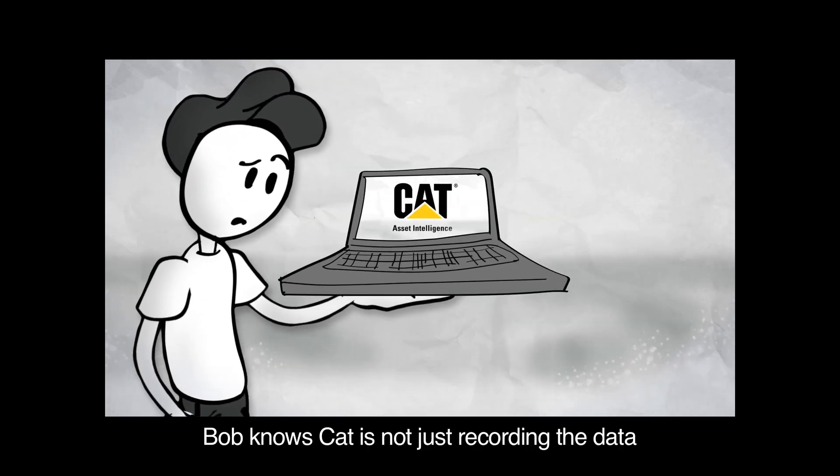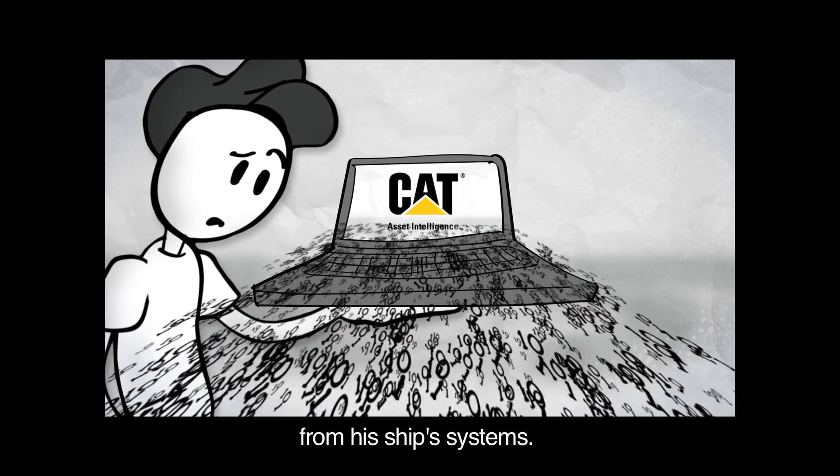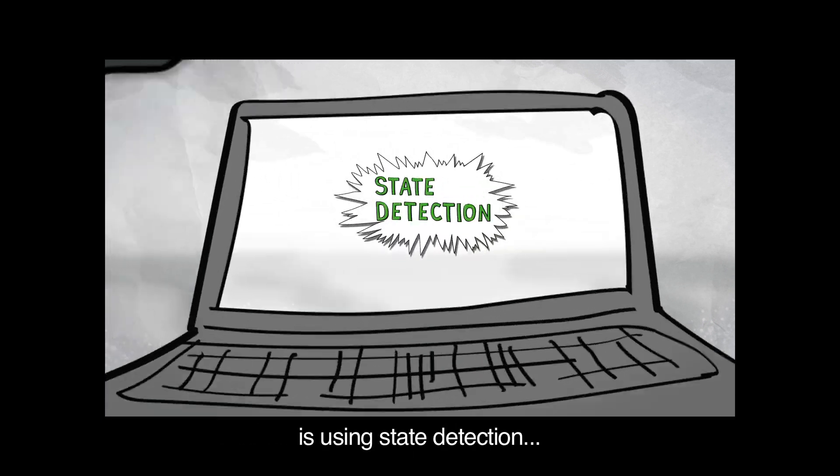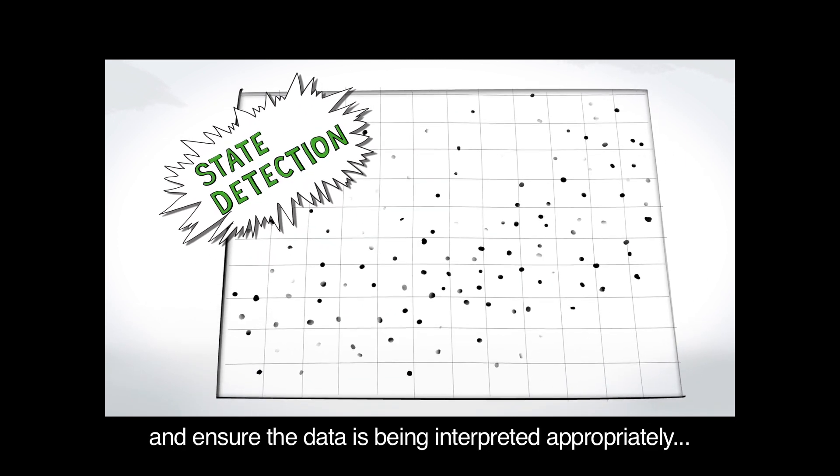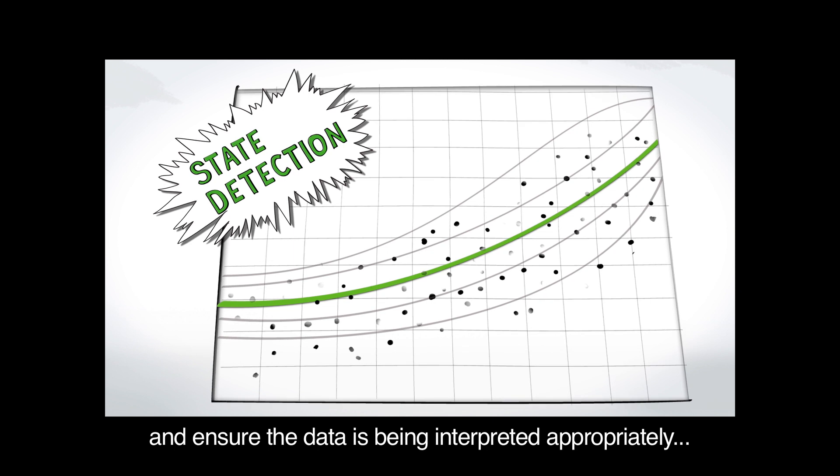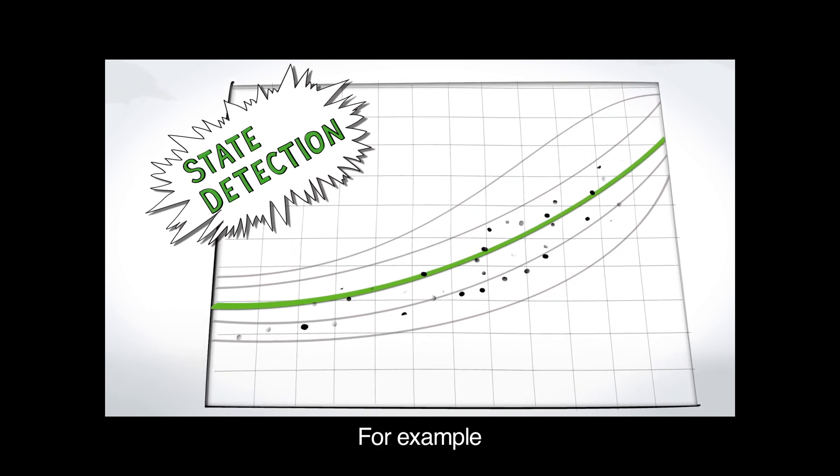Bob knows CAT is not just recording the data from his ship's systems. CAT Asset Intelligence is using state detection to look at how that asset is being used and ensure the data is being interpreted appropriately and to prevent false positives.